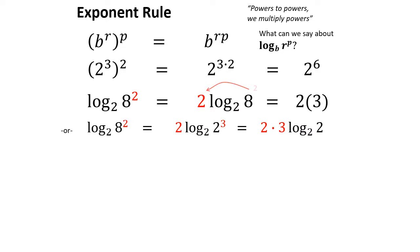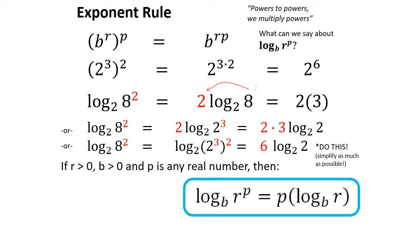Another way to think about it: you should always simplify the argument to the smallest possible base, because it makes the logarithm easier to evaluate. For log base 2 of 8 squared, bring the 2 in front, rewrite 8 as 2 cubed, bring the 3 down — so it's 2 times 3 times log base 2 of 2, which is 1, giving 6. The general rule: log base b of r to the p equals p times log base b of r.